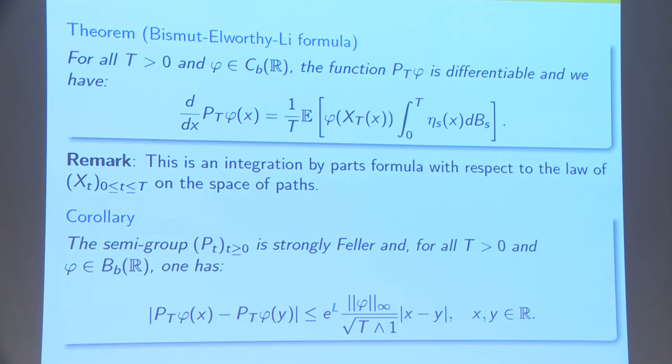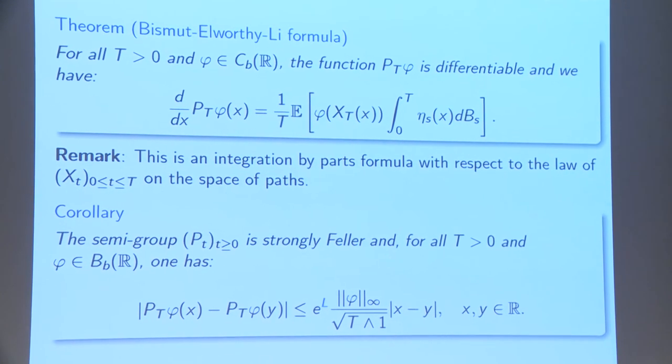The corollary of this theorem is that we have the following Strong-Feller bound. If we integrate this formula here, we obtain that for any X and Y, we have a bound in the supreme norm of φ. And, we have this constant e to the power LT, where L was the bound on B prime. And, we have 1 over square root of T. And, we have a Lipschitz bound, globally Lipschitz bound in X and Y. That's a very, very nice answer to that question, in a nice setting.